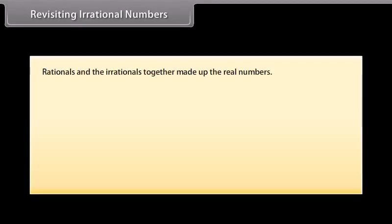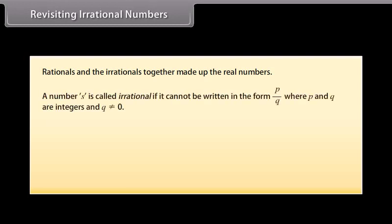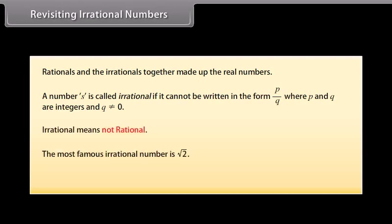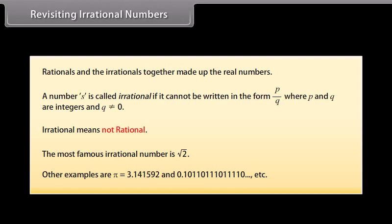Revisiting irrational numbers. We know that rationals and irrationals together make up the real numbers. A number is called irrational if it cannot be written in the form p/q, where p and q are integers and q is not equal to 0. Irrational means not rational. The most famous irrational number is √2. Other examples are π, which equals 3.141592..., and 0.1011011101110...